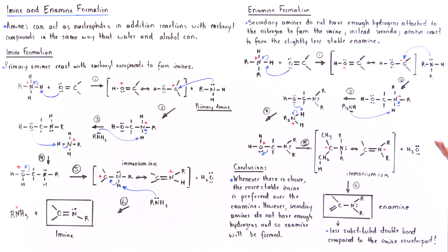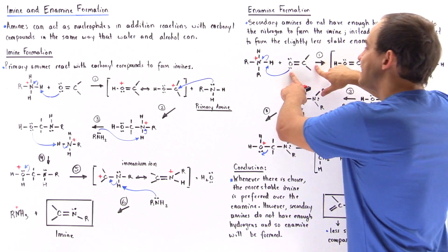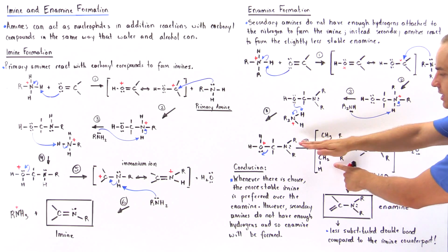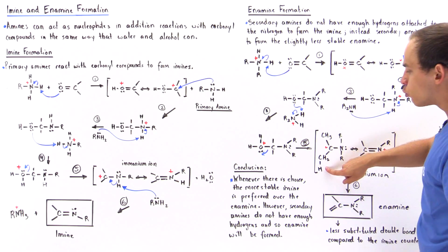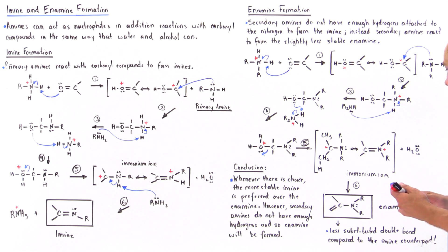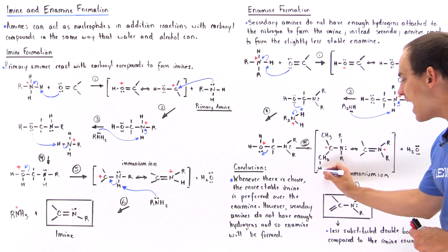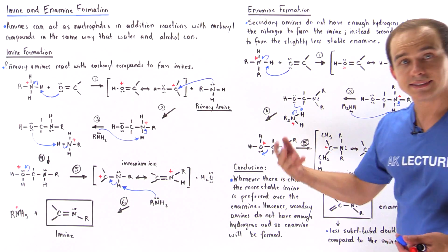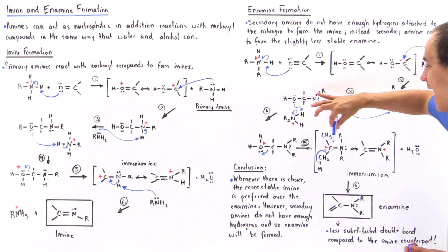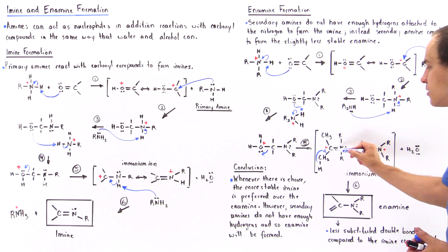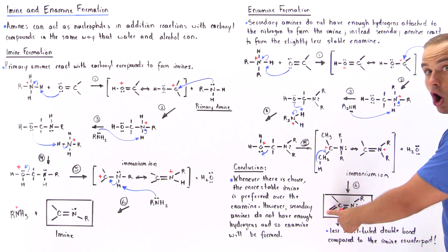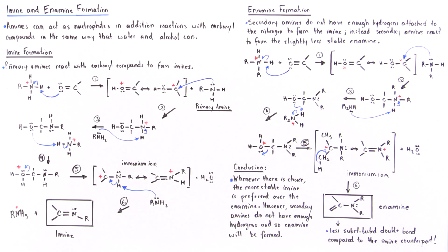So what choices do we have in step six? We started with a ketone, so we have two methyl groups attached to this carbon. One of these methyl groups contains an H atom that can be deprotonated to form a double bond. A secondary amine removes this H atom, and when it is removed, a double bond forms between the alpha carbon and the carbonyl carbon. This closes the carbocation and produces the final product, which contains a carbon-carbon double bond. This molecule is called the enamine.